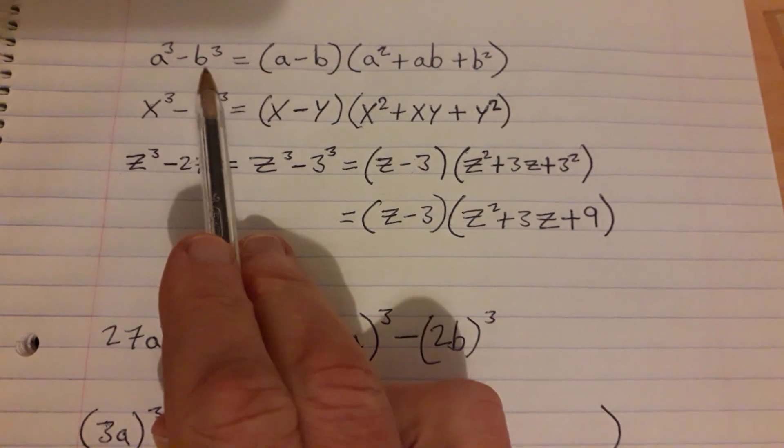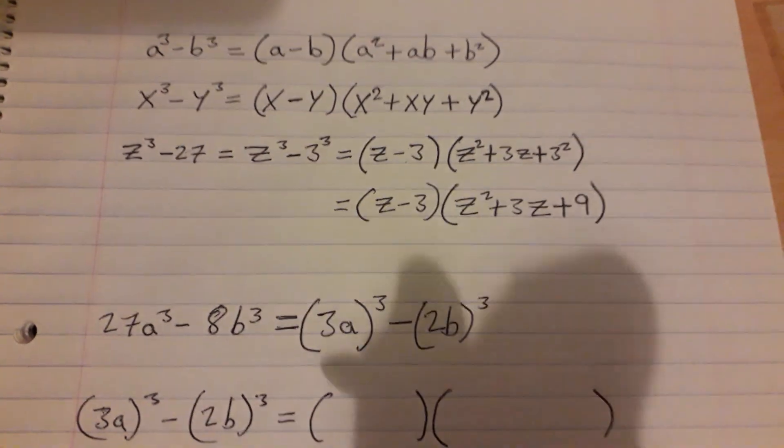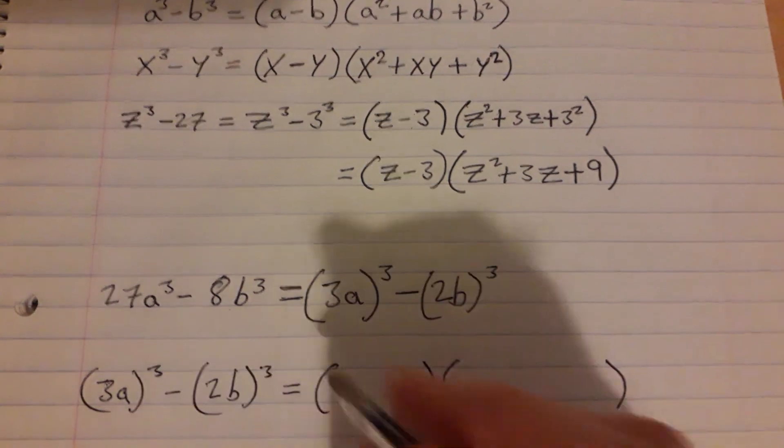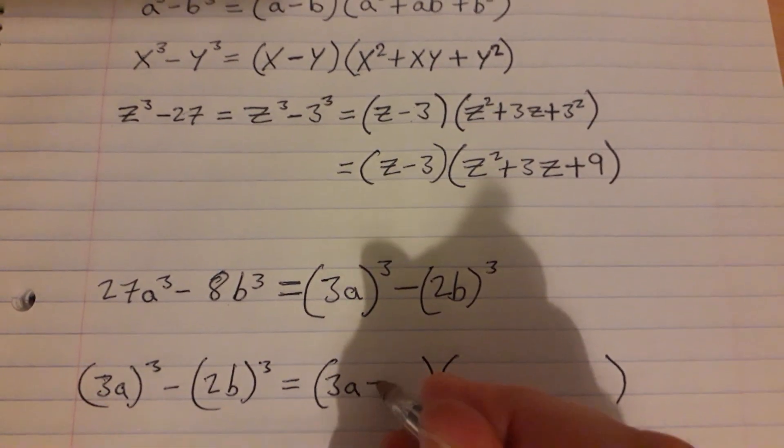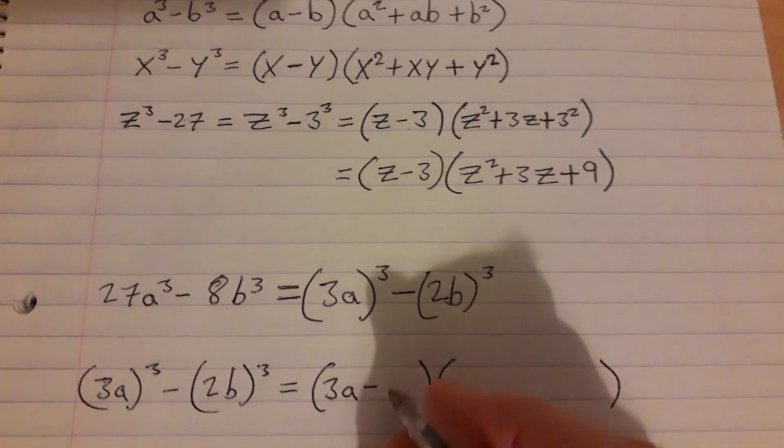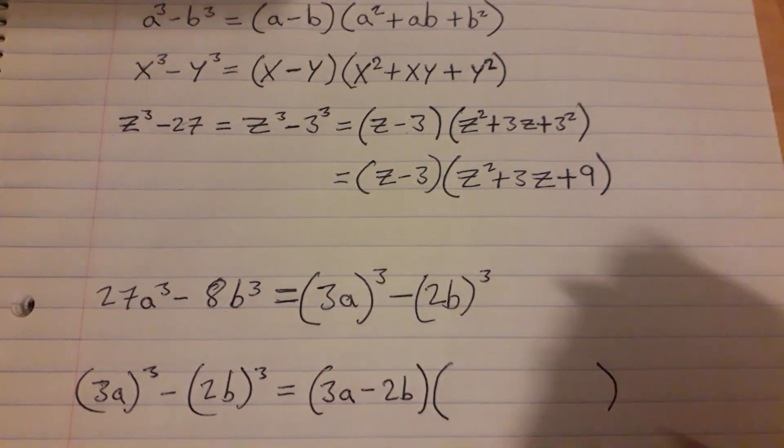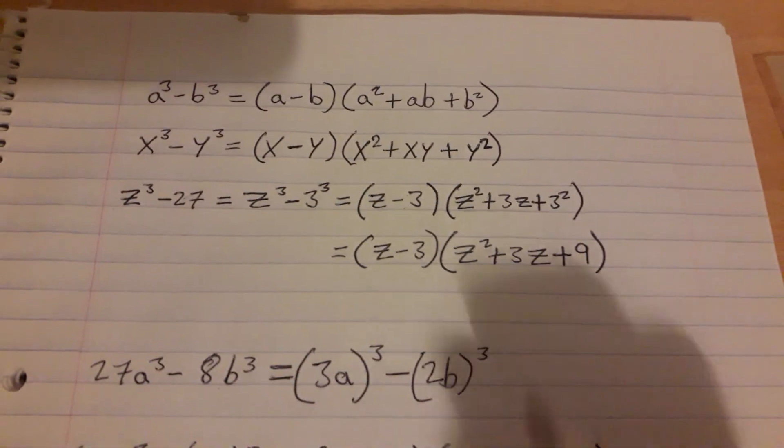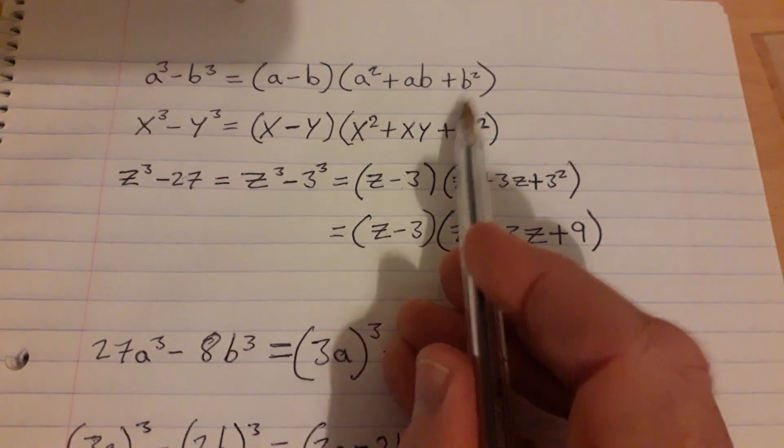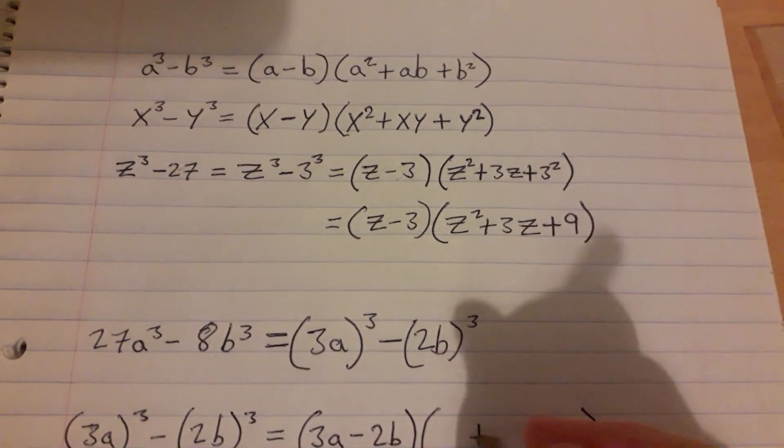So the first part here is 3a minus the second part with no cubes or squares or anything, is just 2b. In here then, well we know again it's going to be a plus and a plus for a start, so I might put those in there.